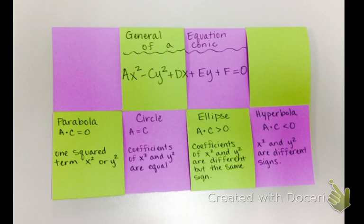If there's an x squared and a y squared and they have the same coefficient and the same sign, then it has to be a circle.